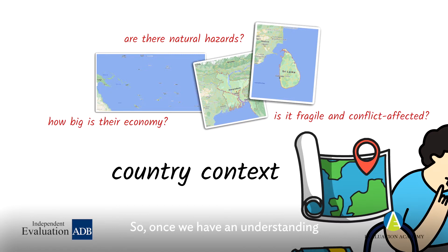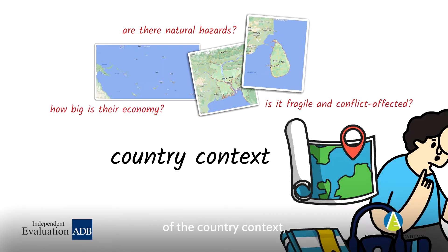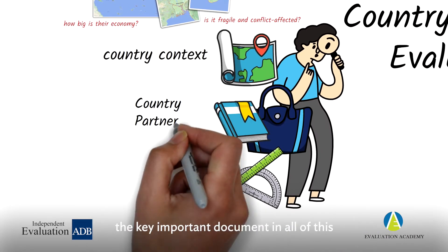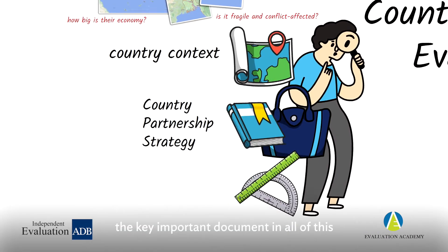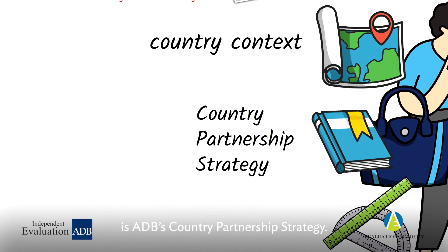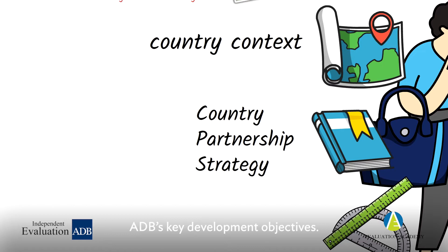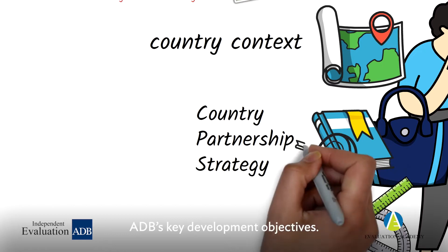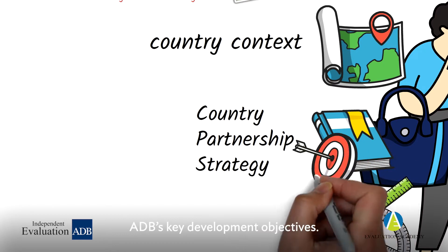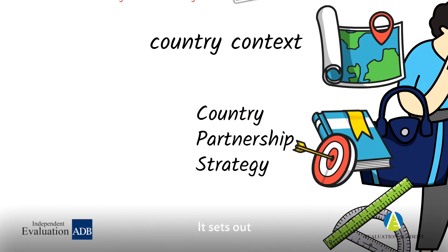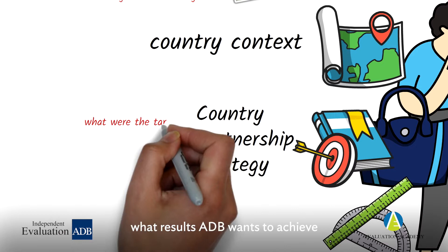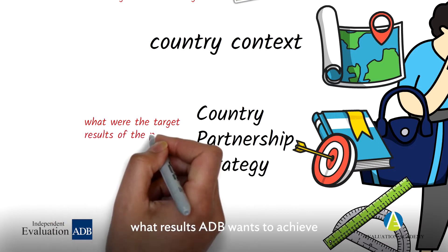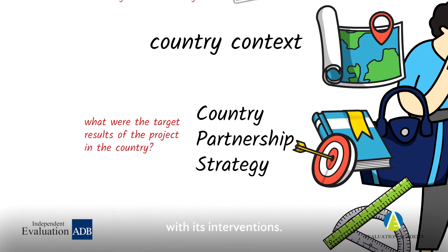Once we have an understanding of the country context, the key important document in all of this is ADB's country partnership strategy. That document sets out ADB's key development objectives and what results ADB wants to achieve with its interventions.